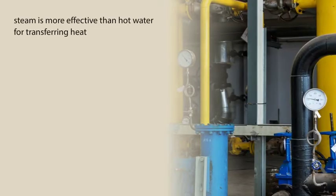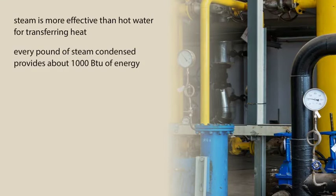Steam is a much more effective means than hot water of transferring heat. Every pound of steam condensed provides about 1,000 BTU of energy. In hot water systems, one pound of water provides only about 20 BTU in a recirculated system with a 20 degree Fahrenheit design temperature drop.